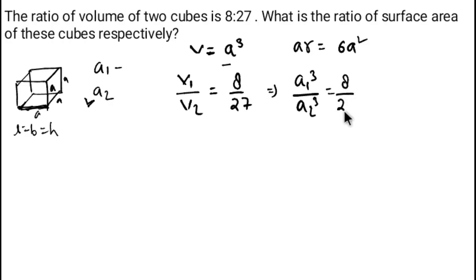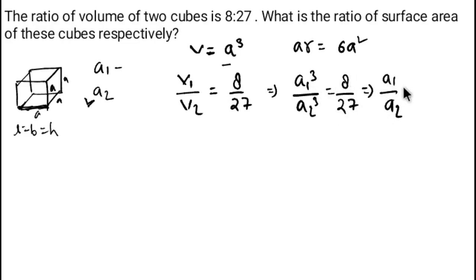Now I want to find the ratio a₁/a₂, so I take the cube root of both sides. On the left-hand side I get a₁/a₂, and on the right-hand side I get the cube root of 8 over the cube root of 27, which equals 2/3.